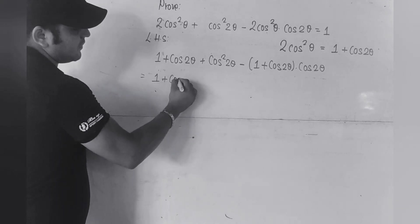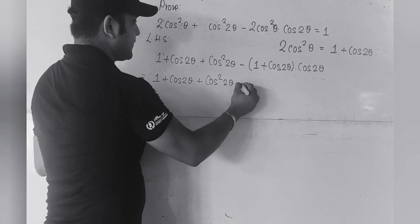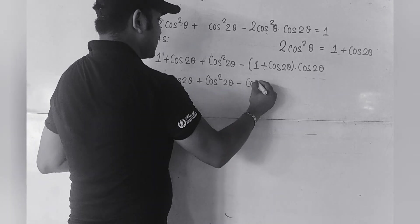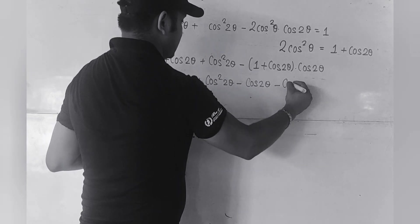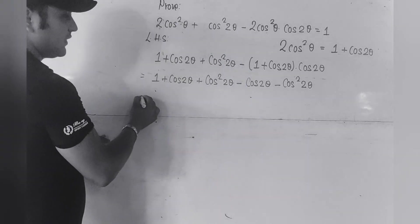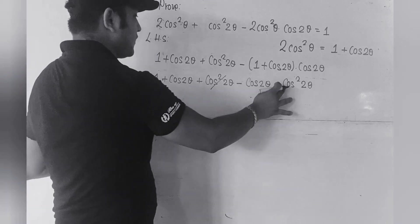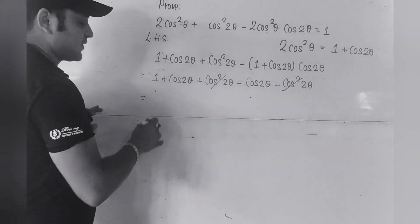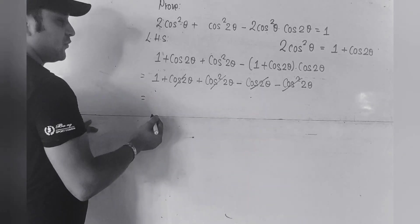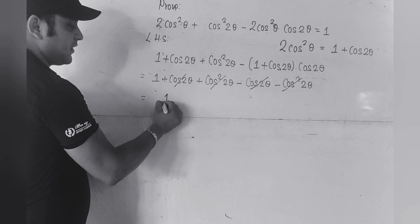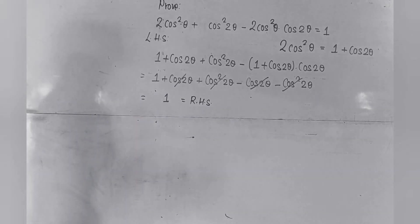We have 1 + cos2θ + cos²2θ minus. Now expanding: 1 × cos2θ is cos2θ, and minus × plus is minus, and cos2θ × cos2θ is cos²2θ. We can see that cos²2θ and -cos²2θ cancel, and cos2θ and -cos2θ cancel. We are left with only 1, which is our right-hand side. So this is how we solve the problem.